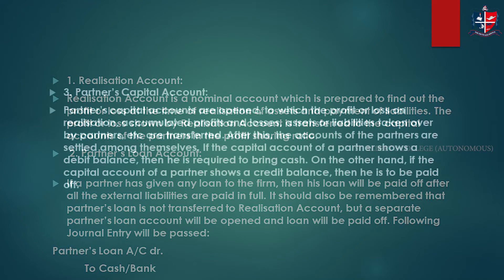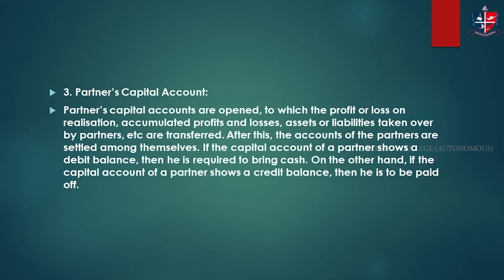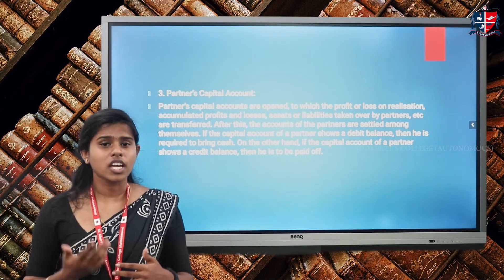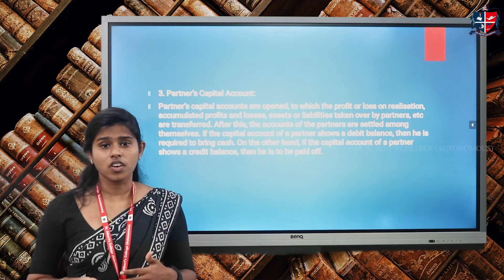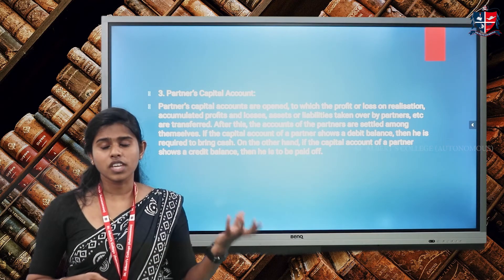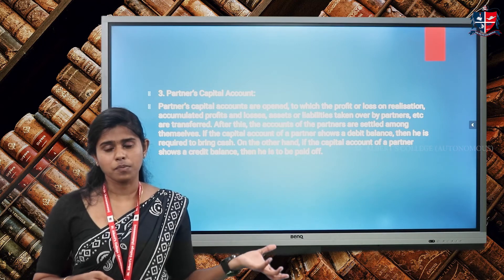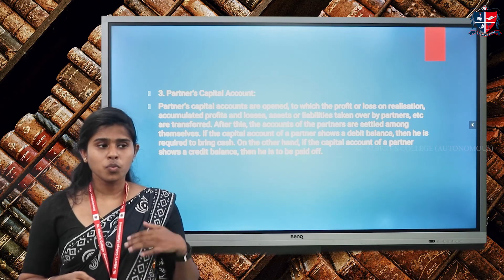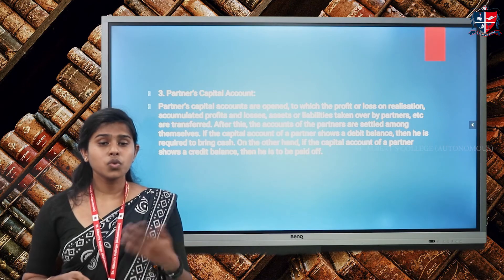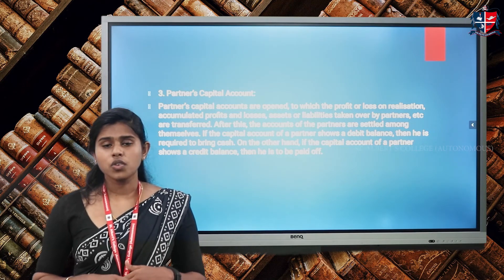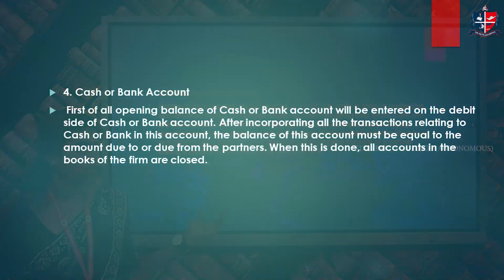Next comes the partner's capital account, which is prepared to show the adjustments in capital. All accumulated profits, accumulated losses, and the general reserve should be adjusted to the partner's capital account. Everything related to capital should be adjusted here, and the final amount due to or due from each partner should be found out by preparing the partner's capital account.